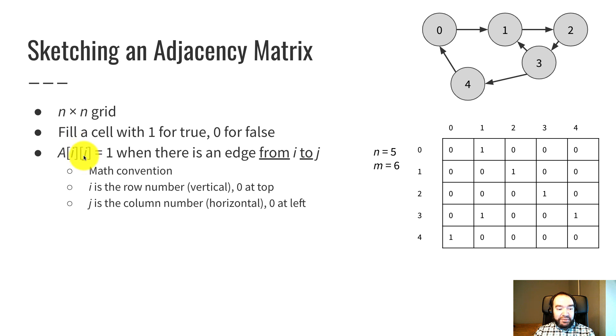And i denotes which of these five rows we're talking about. And j, the second subscript, is the column number. That's on the horizontal left to right. And zero is at the left.